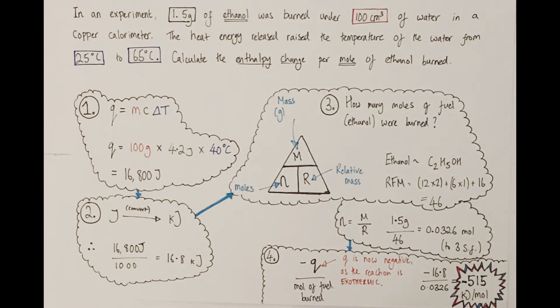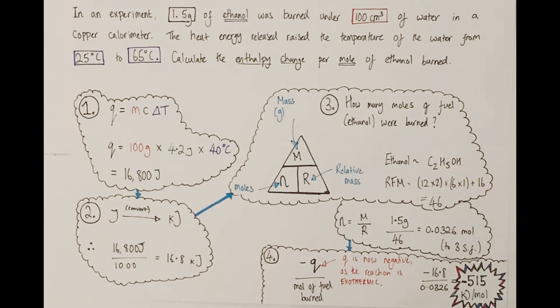Now, step three is how many moles of fuel were actually utilized and burned in our experiment. This requires us to bring in the mole mass conversion triangle: moles equals mass over relative mass. Ethanol, the formula of ethanol is C2H5OH, it's an alcohol. I need to work out the relative formula mass of ethanol. If I know that the mass number of carbon is 12, the mass number of hydrogen is 1, and the mass number of oxygen is 16 in the periodic table, then the relative formula mass is the sum of all those values using the numbers found in the actual formula itself.